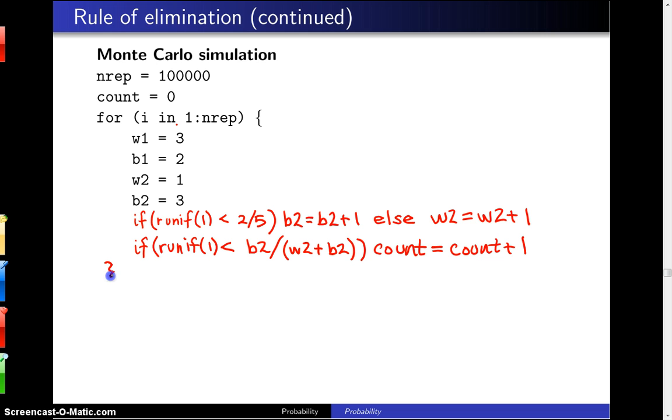That ends the loop. We do that 100,000 times and at the very end we print out count divided by nrep and that is an estimate for the probability of getting a black ball on the second draw out of the second urn. If you run this simulation several times you will find that those numbers will kind of hover around the analytic value which was 0.68.